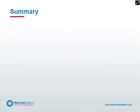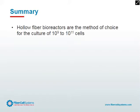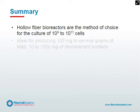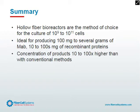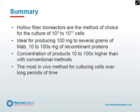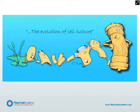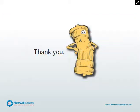In summary, hollow fiber bioreactors are the method of choice for the culture of 10 to the 9 to 10 to the 11 cells. It's an easy way for any lab to handle large numbers of cells, ideal for producing 100 mg to several grams of monoclonal antibody and 10 to 100 mg of recombinant protein. The concomitant concentration of products is 10 to 100 times higher than with conventional methods. Most importantly, it's the most in vivo-like method for culturing cells over extended periods of time, and it will save you time, space, and purification costs. Hollow fiber bioreactors are the most evolved, most in vivo-like way of growing cells in the laboratory versus other methods that are limited in their relevance to physiology.